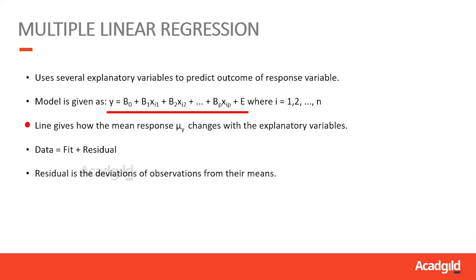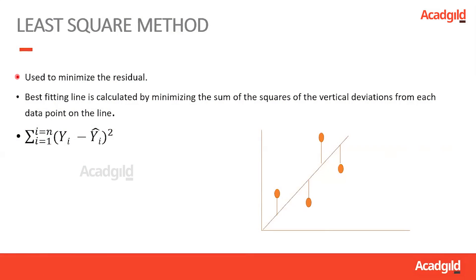The line shows how the mean response y changes with the explanatory variables. As in simple linear regression, here also data equals fit plus residual, where residual is the difference between the observation and the mean. The method that linear regression uses to minimize the residual is the least square method. This method attempts to minimize the sum of the square deviation of each data point from the line that is predicted by the model.